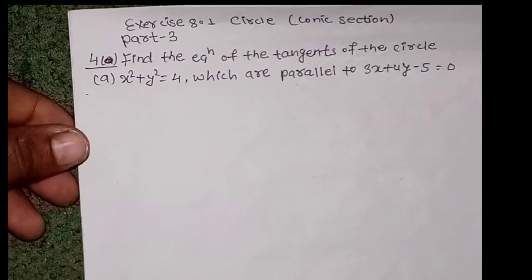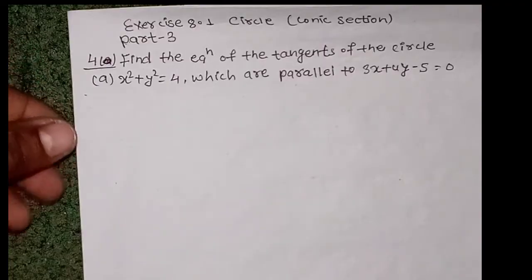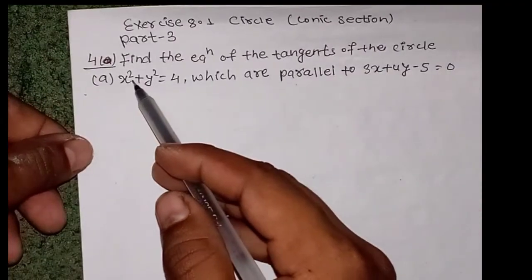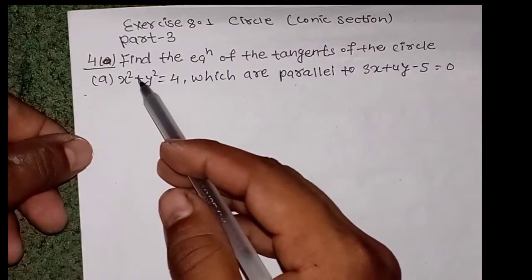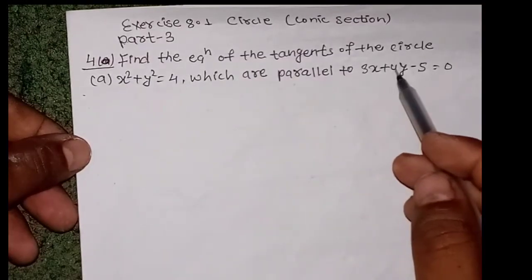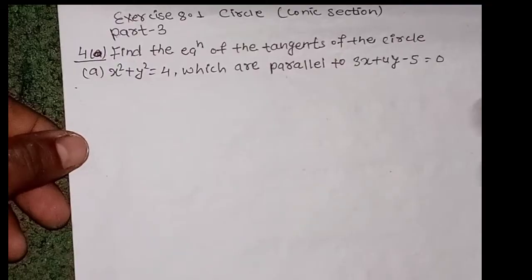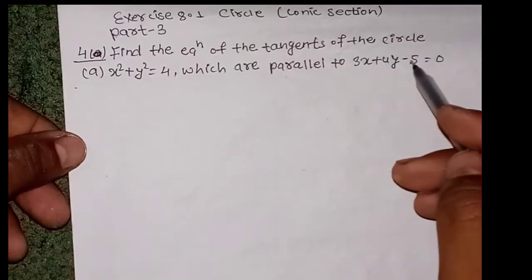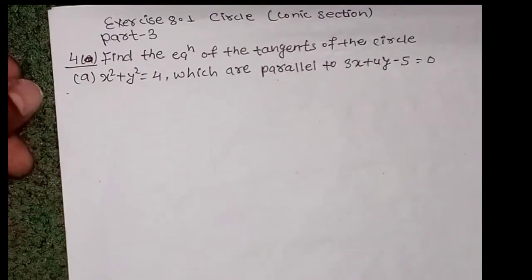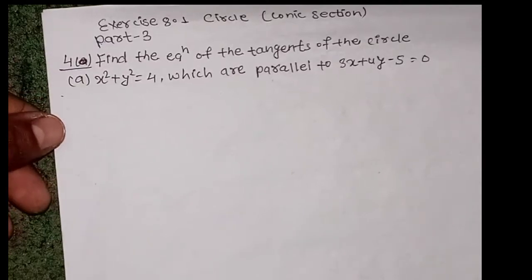Find the equation of the tangent of the circle. The circle equation is x² + y² = 4, and the tangent is parallel to the line 3x + 4y - 5 = 0. So 3x + 4y - 5 = 0 is parallel to the tangent of the circle.